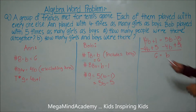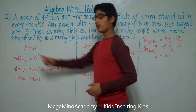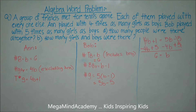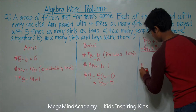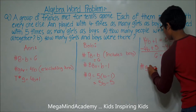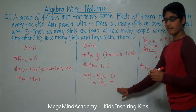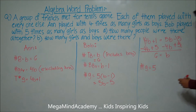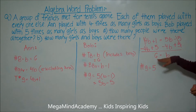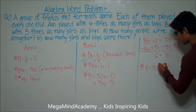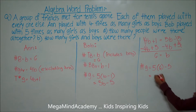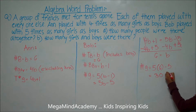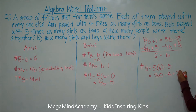We need to find out how many people there were altogether. To do that, we first find the number of girls. The number of girls G is equal to 5B minus five. We know B is equal to six, so let's substitute: five times six minus five, which equals thirty minus five, which equals twenty-five. So the number of girls is equal to twenty-five.